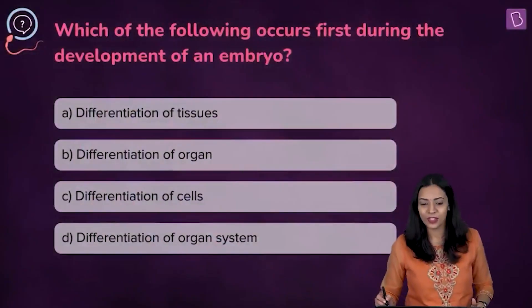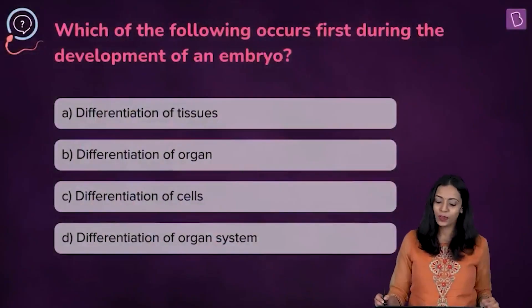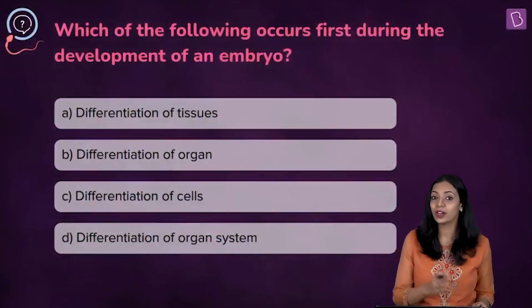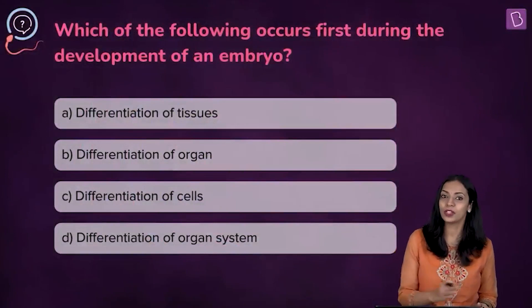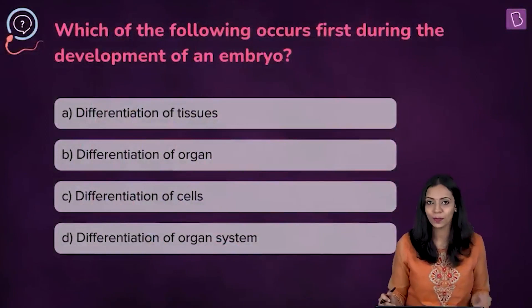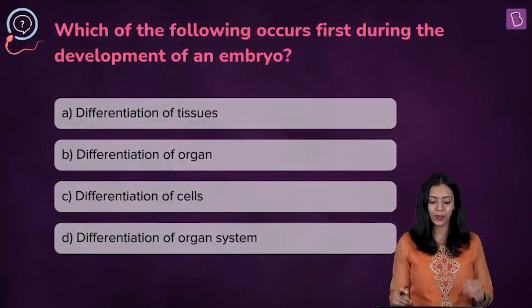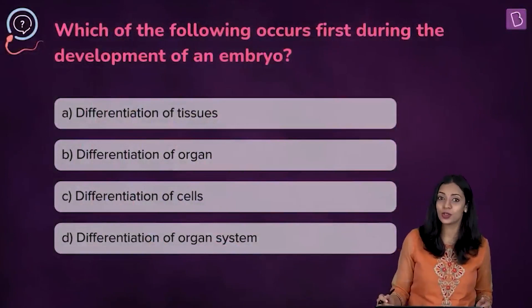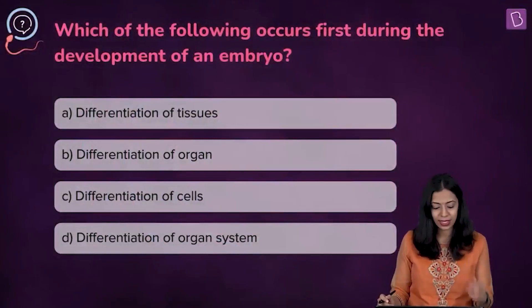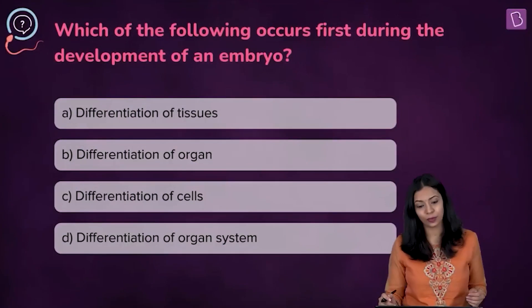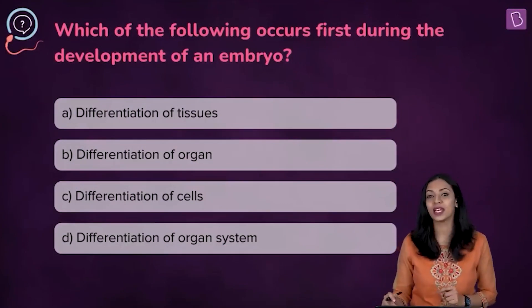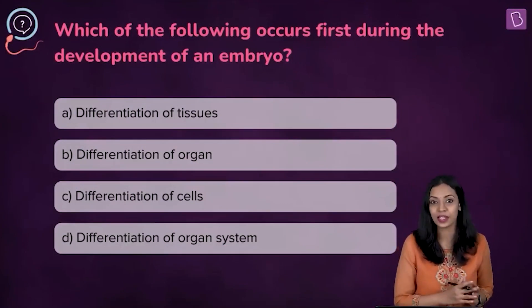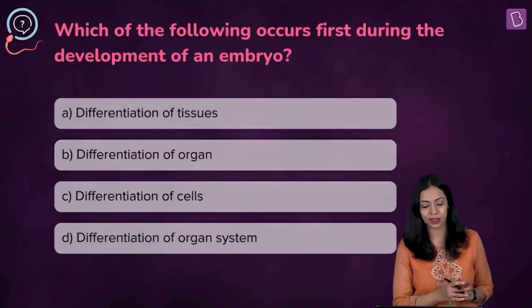Here's the next question: which of the following occurs first during development of an embryo? In the options we have differentiation of tissues, differentiation of organs, differentiation of cells, and differentiation of organ systems.